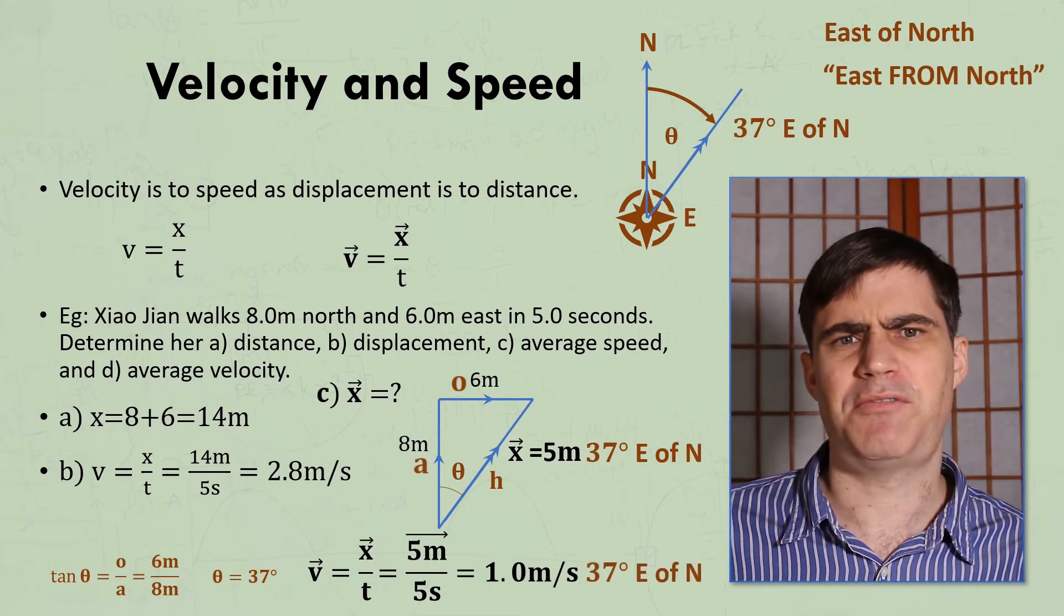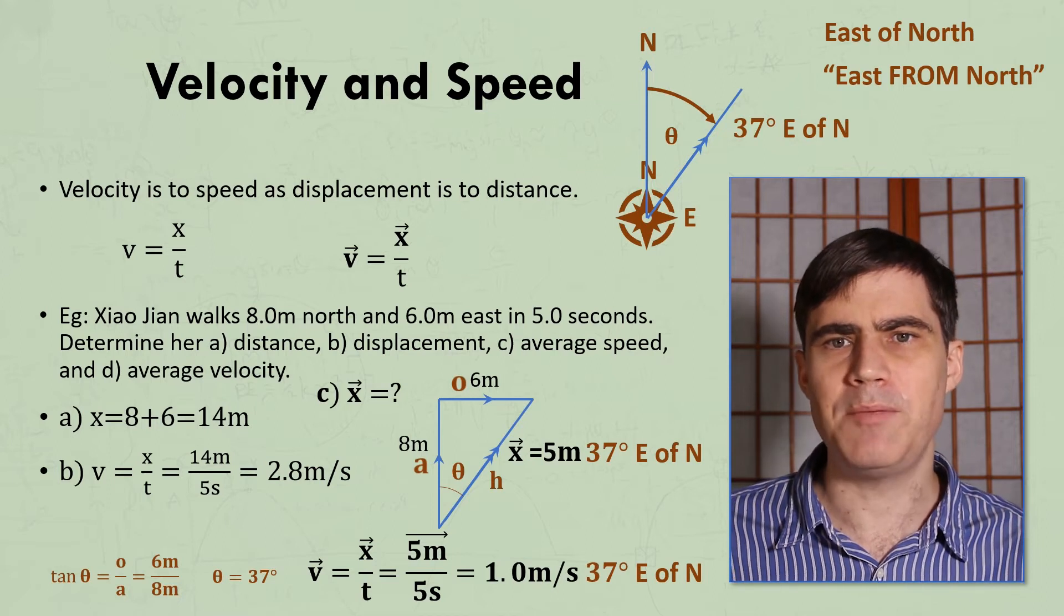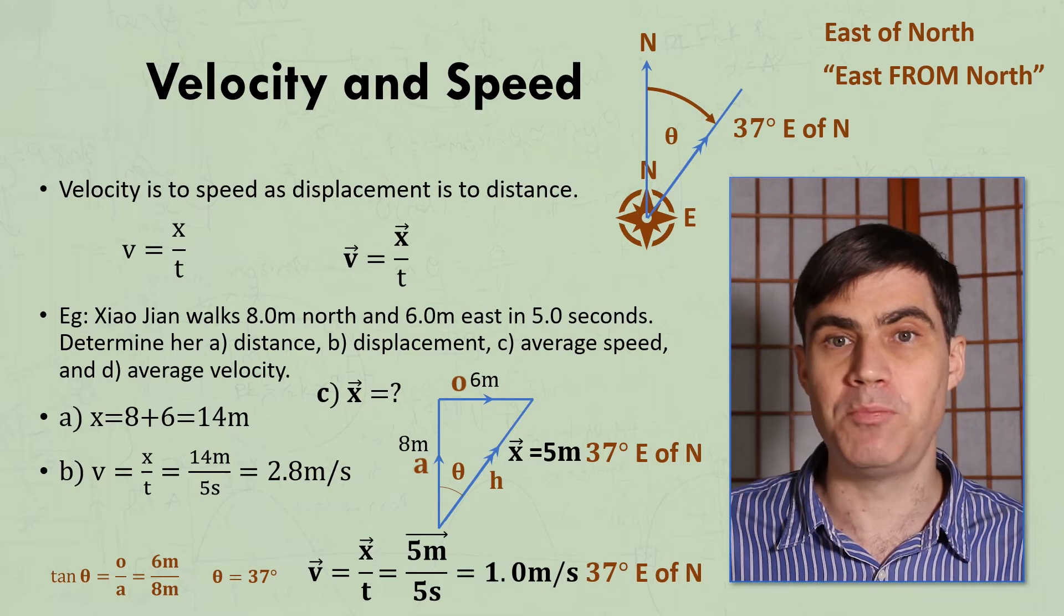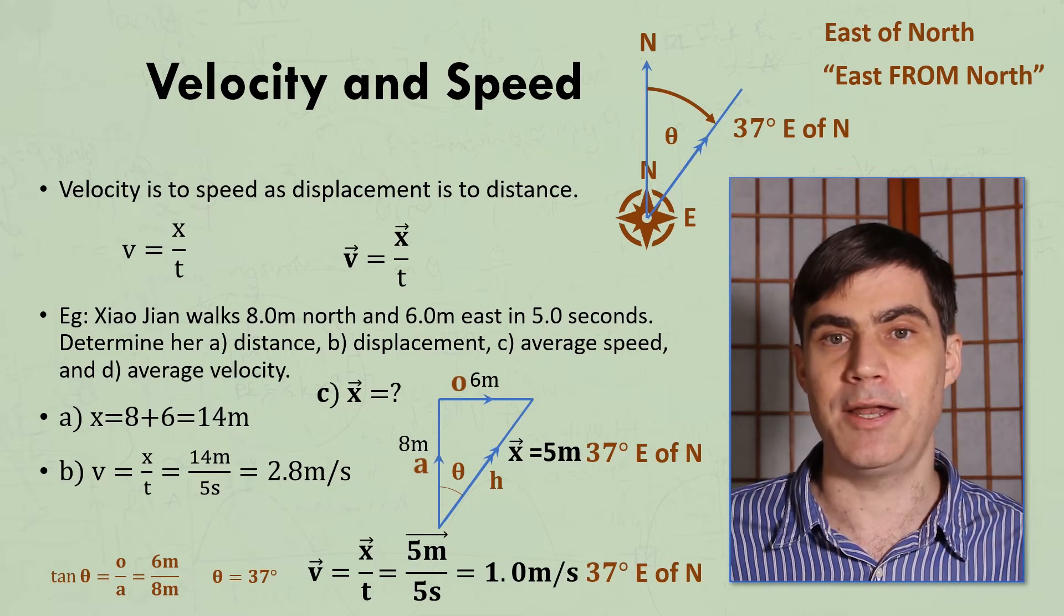because Xiao Jian never actually walked 1 meter in any one second. If her speed was constant, then she walks 2.8 meters every second, which is her speed we calculated before.